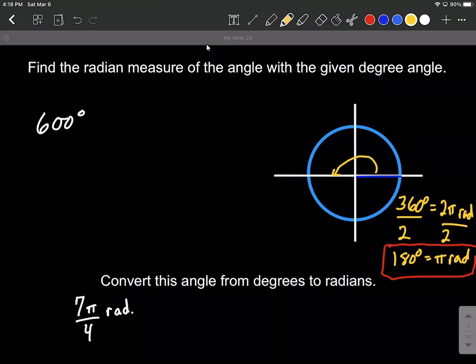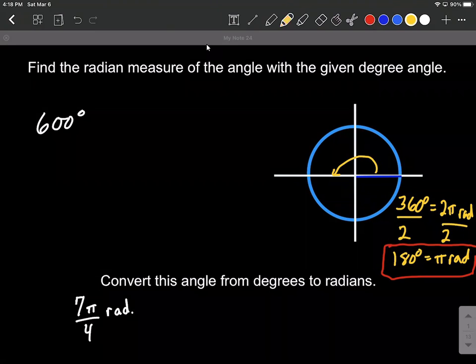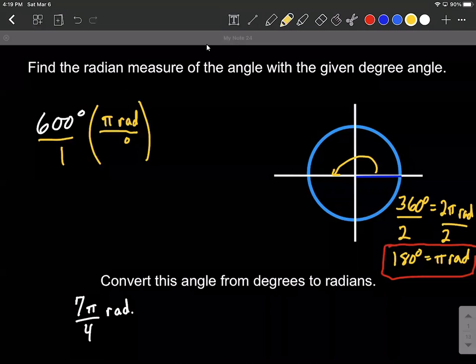But what we want to do is if we are given a degree measure, we're going to multiply by this conversion factor, but we want to strategically write it. You want to write it so that our degrees are currently up in the numerator. So to cancel out those degrees and end up with radians, you need to put the radians in the numerator and the degrees down in the denominator. So as we said, pi radians is equal to 180 degrees.